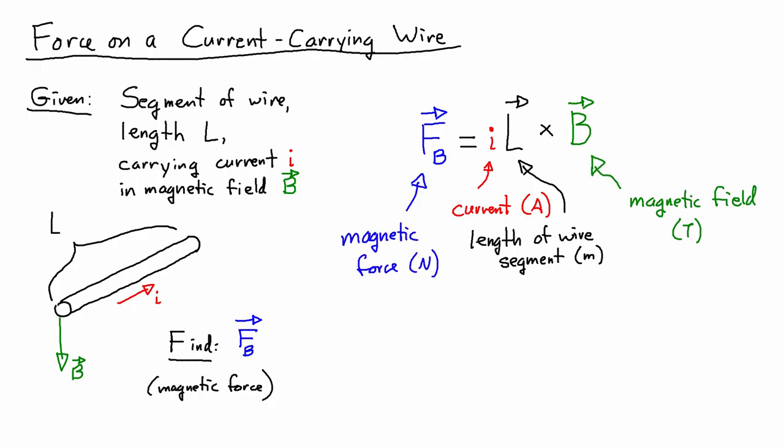And the only tricky thing about this is that the L term is actually a vector. You notice that it has the arrow on top. And we choose the direction of vector L to be in the positive direction of the current.